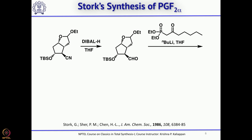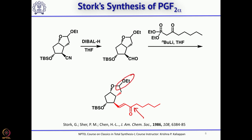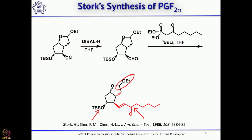Then carry out the Horner–Wadsworth–Emmons modification of the Wittig reaction to get the trans (E) double bond. Then reduce the carbonyl to alcohol, hydrolyze the lactol ethyl ether to the lactol, and do the Wittig reaction. Removal of the TBS group then gives PGF2 alpha.